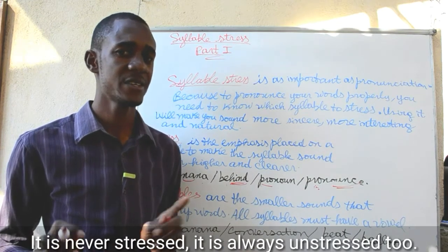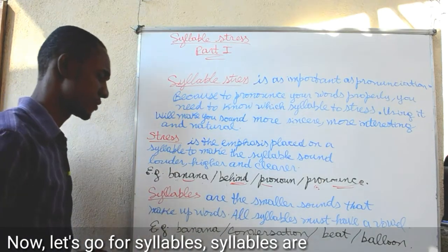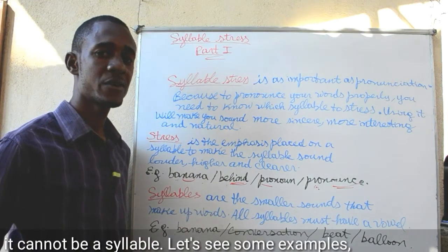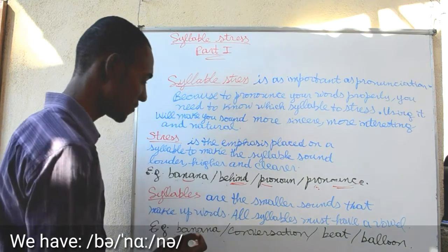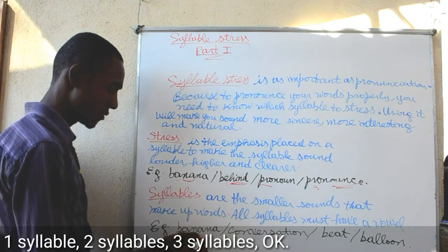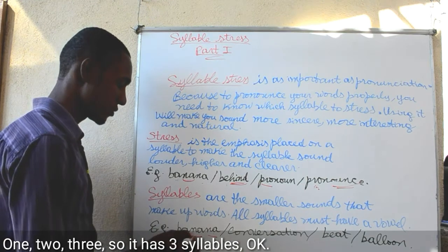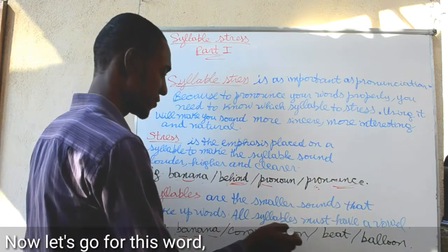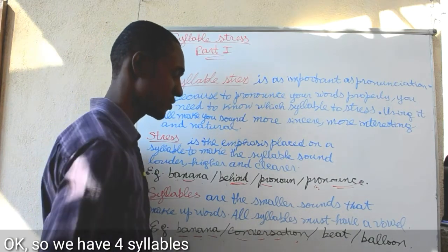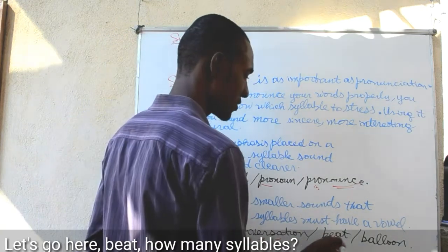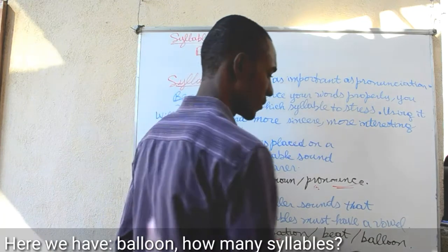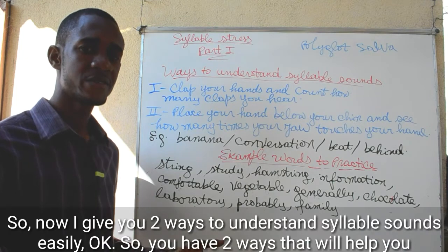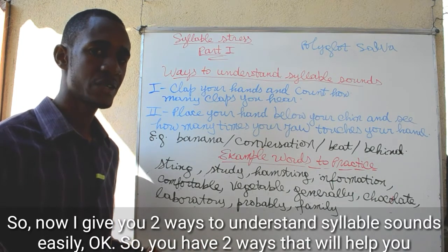The schwa will always be really fast and low in pitch — we'll make an entire video just to talk about this sound. It is never stressed; it is always unstressed. Now let's go for syllables. Syllables are the smallest sounds that make up words. All syllables must have a vowel — that means if it doesn't have any vowel, it cannot be a syllable. For example: 'banana' has three syllables. 'Conversation' has four syllables. 'Beat' has only one syllable. 'Balloon' has two syllables.